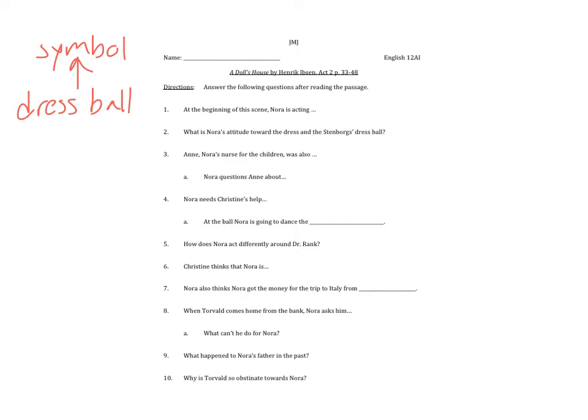As Nora ponders that, Mrs. Linde comes into the house. Nora and Mrs. Linde are foils, and Nora needs Christine's help sewing her outfit for the fancy dress ball. At the ball, Nora is going to dance the tarantella — another symbol. It's a symbol of Nora performing for her own husband; she's got to act like a person she really isn't. She's mostly doing it to impress her husband, and she's got all of this in the back of her mind.